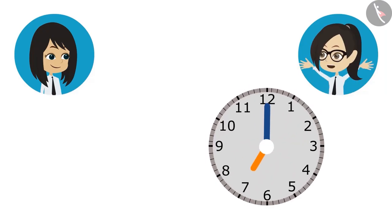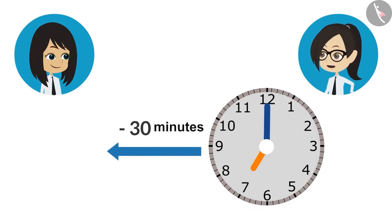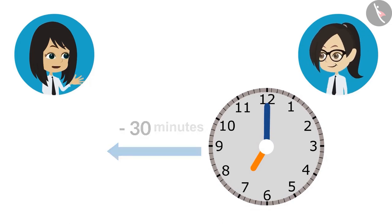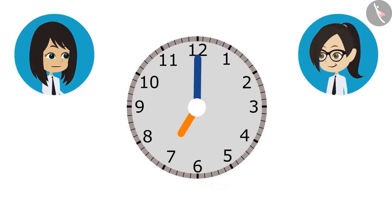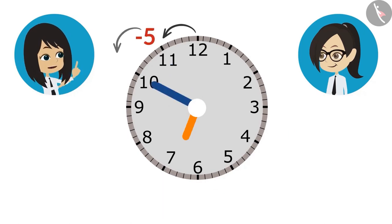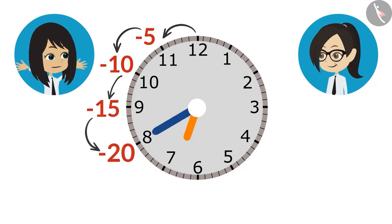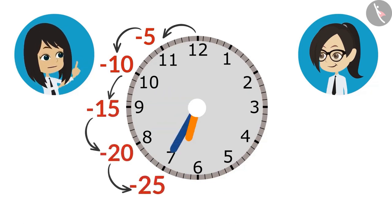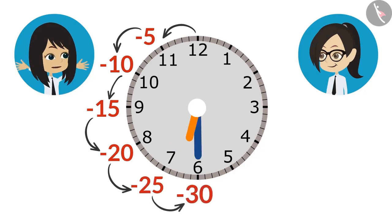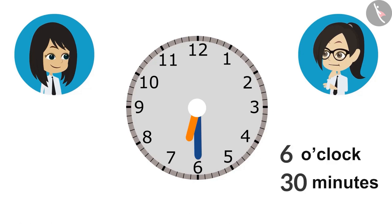For this, first we will draw 7 o'clock in the clock. After that, we will reduce the time it will take to start from home to reach school. Right now the clock is at 12. To subtract 30 minutes, we will go from 12 to 11, which reduces 5 minutes. When it comes to 10, then 10 minutes, 15 at 9, 20 at 8, 25 at 7, and 30 minutes when it reaches 6. This means tomorrow we have to leave home at 30 minutes past 6 o'clock without fail.